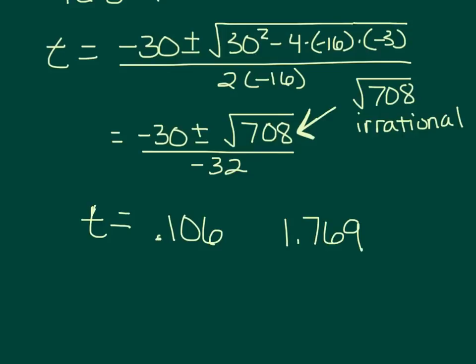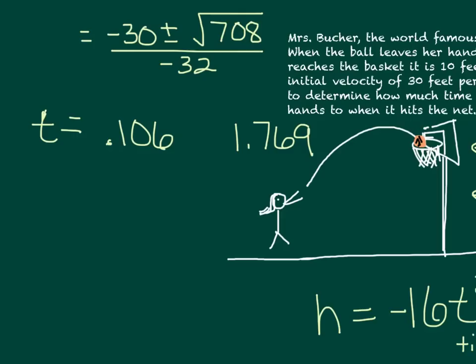Why are there two answers? If you look at the picture of me shooting the basketball, at 10 feet — right where the basket is — the parabola actually hits that value twice. At 0.106 seconds the ball is on its way up, and at 1.769 seconds the ball is on its way back down, and that's when it hits the net. So if we want to know when it hits the net, the answer is 1.769 seconds.